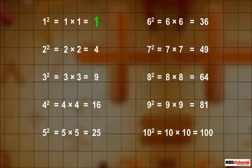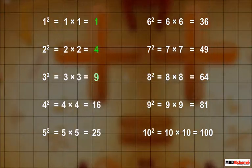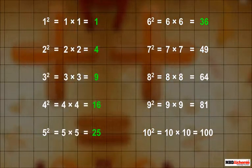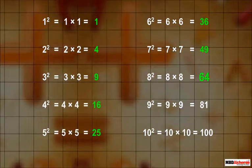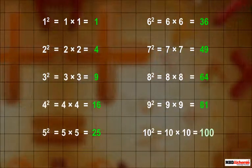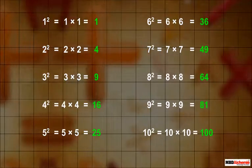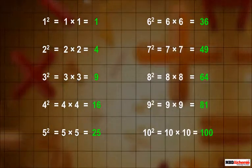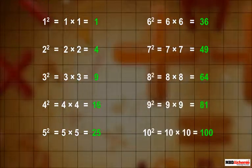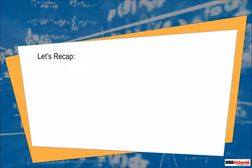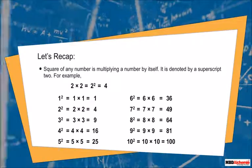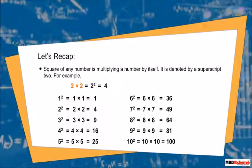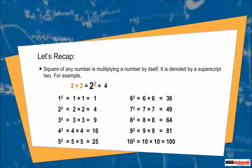Numbers such as 1, 4, 9, 16, 25, 36, 49, 64, 81, and 100 are special numbers, as these are the product of a number by itself. Let's recap: the square of any number is multiplying a number by itself, and it is denoted by a superscript 2.